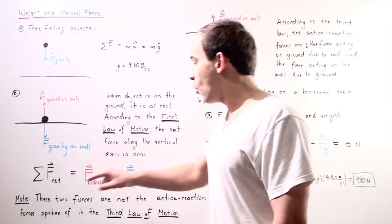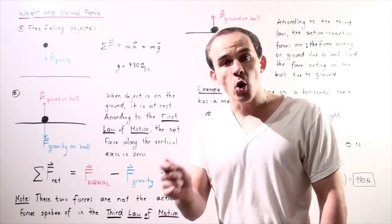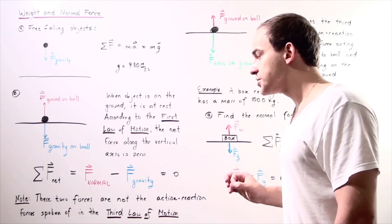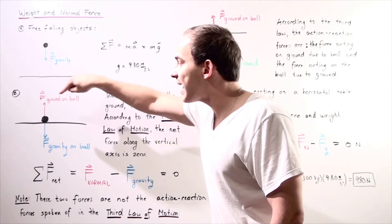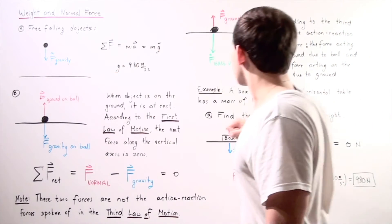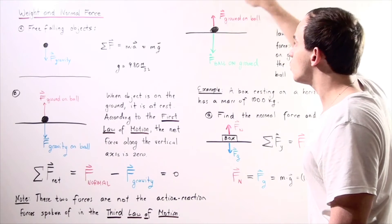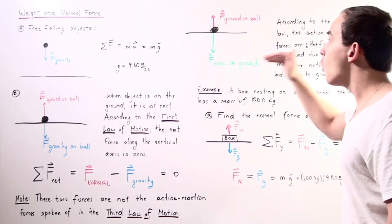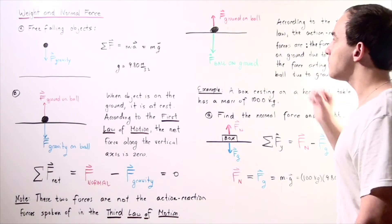Note a very important point: these two forces — the normal force and the weight — are not the action-reaction forces spoken of in Newton's third law of motion. Action-reaction forces act on two different objects, but these two forces are acting on the same exact object, namely our ball. For example, the ground creates a normal force on the ball, which is object number one.